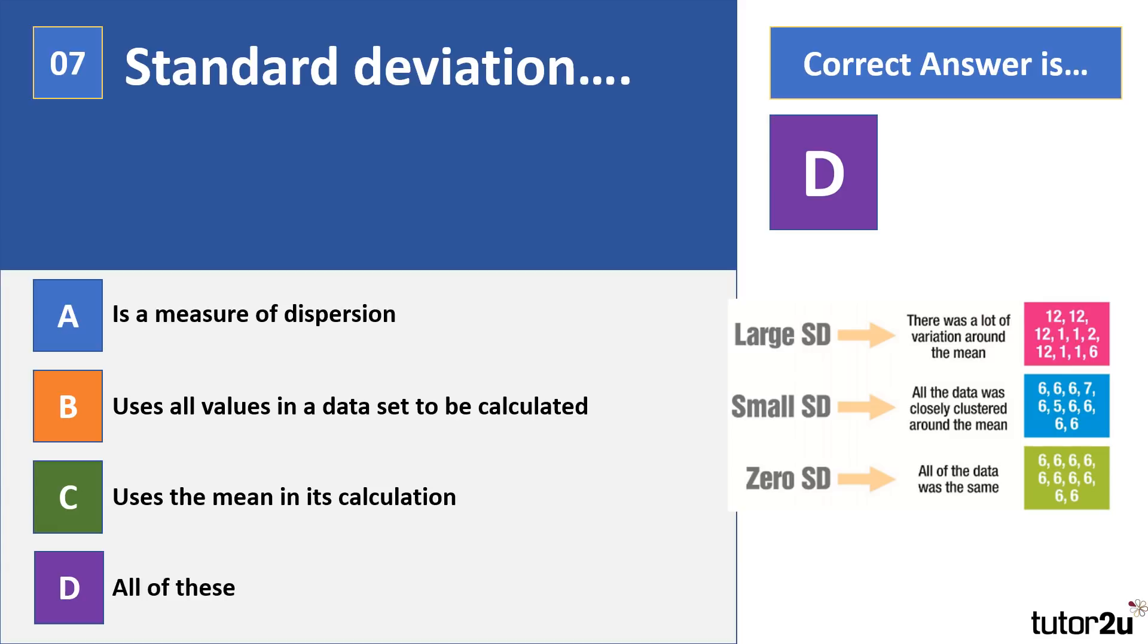Standard deviation is a measure of dispersion just like the range. Key difference between the range and standard deviation is standard deviation is basically better. The range only uses the top and bottom values in a data set to calculate itself, whereas standard deviation uses all the values. What it basically does is calculate the average distance of each score away from the mean.